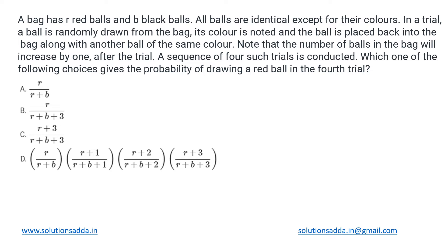This engineering mathematics question is based on probability. We have a bag that has r red balls and b black balls. The initial configuration is given as r and b, where r represents the number of red balls and b represents the number of black balls. All of these balls are identical except for their color. In a trial, a ball is randomly drawn from the bag, its color is noted, and it is placed back into the bag along with another ball of the same color.